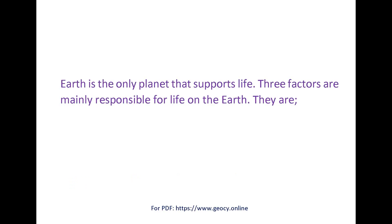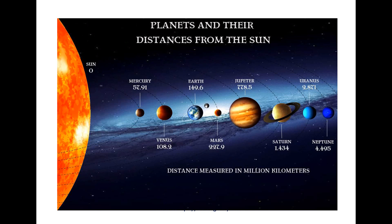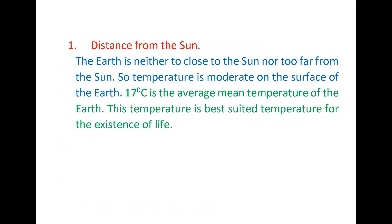Earth is the only planet that supports life. Three factors are mainly responsible for life on the earth. First one is distance from the sun. The earth is neither too close to the sun nor too far from the sun, so temperature is moderate on the surface of the earth. 17 degrees Celsius is the average mean temperature of the earth. This temperature is best suited for the existence of life.